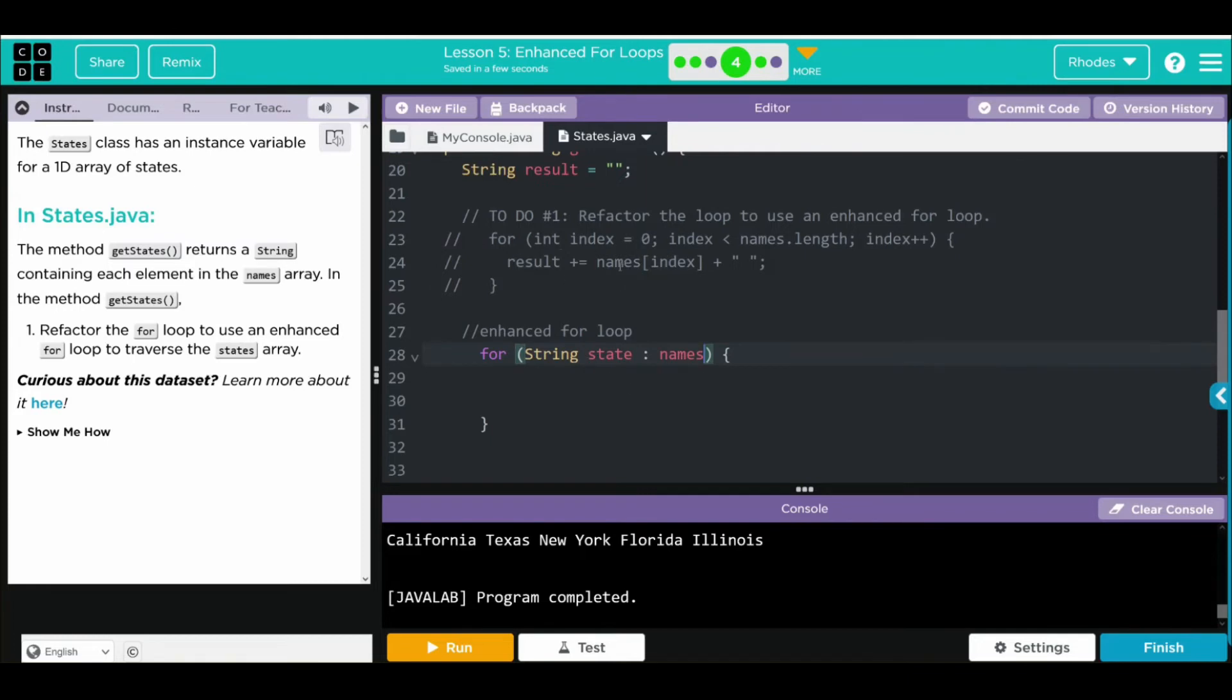This time results is adding to whatever names index we're at. Well, names is now the state variable. So we're going to return state. This time result plus equal is going to equal state plus our same quotes because we don't want to squish the numbers, and a semicolon. Again, our variable state is just replacing the index we're at and storing each element there. So our result is storing whatever names index we're at and then printing it off.